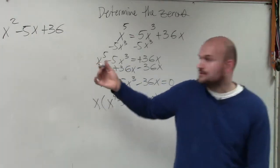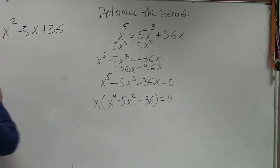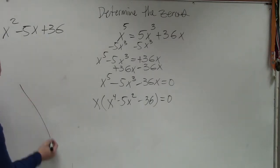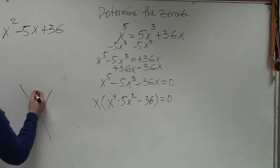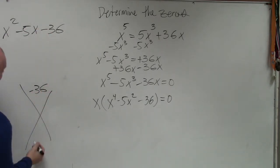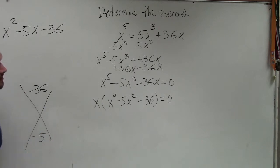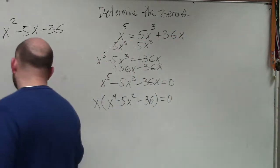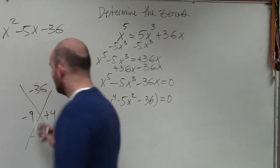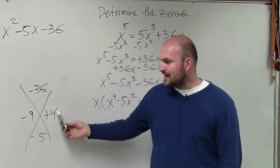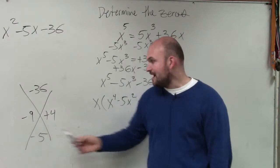So now we say, can we factor this? Well, to do that, if you guys remember your method, what we simply take here is we say what two numbers multiply to give me negative 36 and then add to give me negative 5. So it's going to be negative 9 and positive 4. Because negative 9 times positive 4 gives me negative 36. Negative 9 plus positive 4 gives me negative 5.